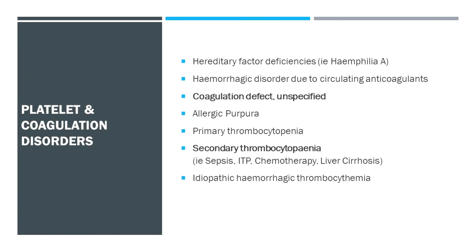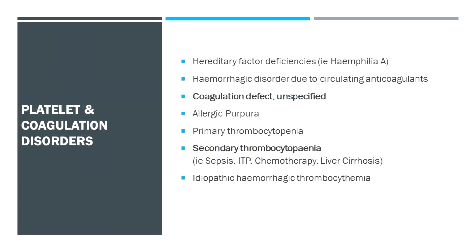In terms of platelet disorders and coagulation disorders — these are often grouped together in coding. You can think of hereditary factor deficiencies like haemophilia A or B, and rarer ones like factor 5 or factor 10. There can be haemorrhagic disorders due to anticoagulants — naming the anticoagulant helps. Obviously the anticoagulant doesn't cause bleeding itself, but it makes whatever bleeding harder to control and more likely to affect the patient's clinical status. One that's often used is 'coagulation defect unspecified' — if you just write 'coagulopathy,' that's what you'll get — but it still actually adds a lot of complexity and is probably underutilised.